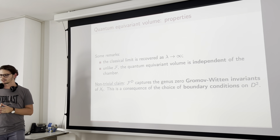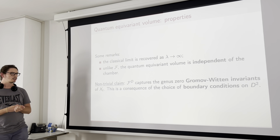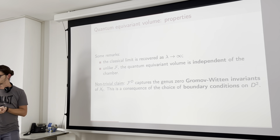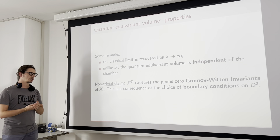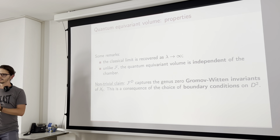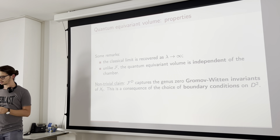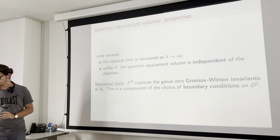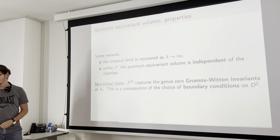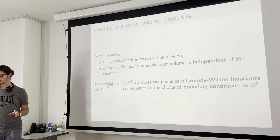A key claim — the result of a former paper by Luca Cassia, Niccolò Piazzalunga, and Maxime Zabzin — is that this quantum equivariant volume captures the genus zero Gromov-Witten invariants of the manifold. This is a consequence of the choice of boundary conditions we put on our gauged linear sigma model. This is a key point in establishing the relation between closed and open Gromov-Witten invariants.